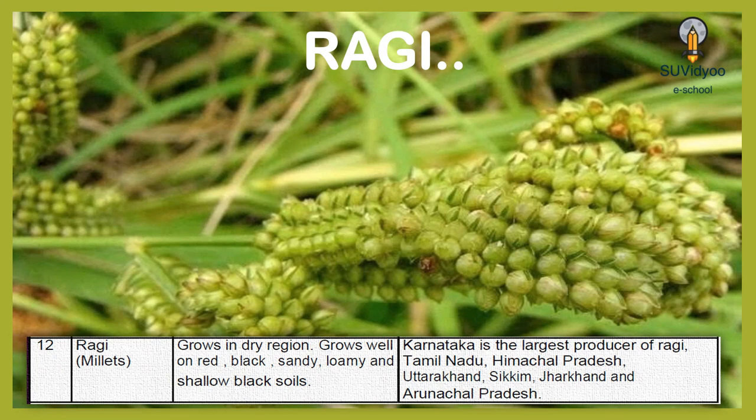Ragi is also a millet crop. It grows in dry regions. It grows well on red, black, sandy, loamy and shallow black soil. Karnataka is the largest producer of Ragi, followed by Tamil Nadu, Himachal Pradesh, Uttarakhand, Sikkim, Jharkhand and Arunachal Pradesh.